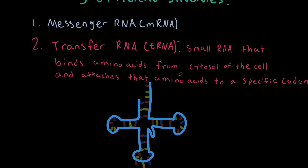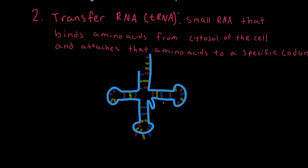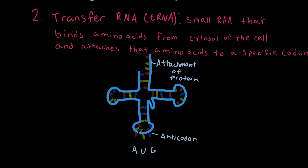The tRNA takes a specific amino acid to code for a specific anticodon in our ribosome. To memorize tRNA simply, think of it as a small RNA that binds an amino acid. Here's what a 2D version of tRNA looks like. We have the attachment site of protein, where the protein attaches. The second structure on the tRNA is known as our anticodon. The anticodon will attach to a specific part of the codon from the mRNA. For example, if the codon is adenine, uracil, guanine, the anticodon would be uracil, adenine, cytosine. You can think of it as the attachment site.